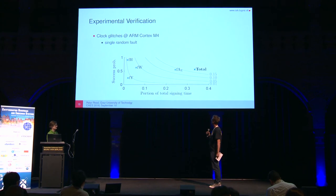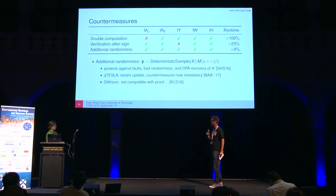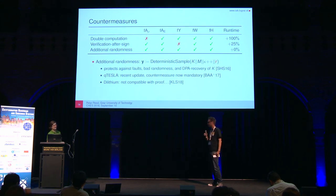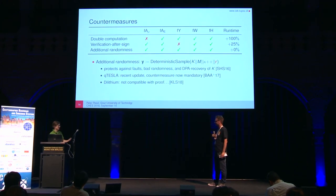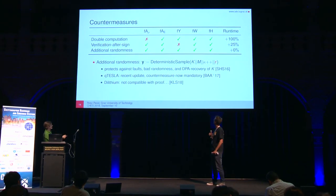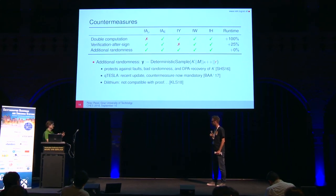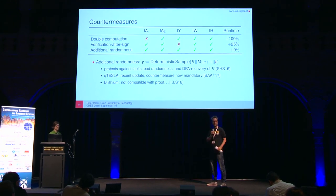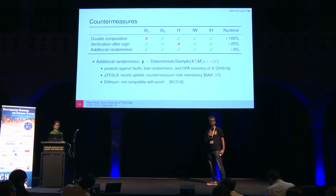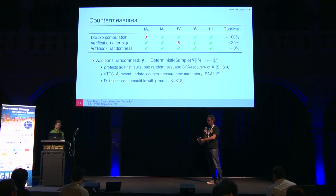A follow-up question asked why adding randomness adds nothing to the runtime. The answer is that the 0% overhead estimate assumes you have randomness ready and everything is set up, e.g., a hardware RNG. It will add something in practice — to also protect against DPA you'd fill the first block of SHAKE with random data — but the overhead is negligible compared to everything else.